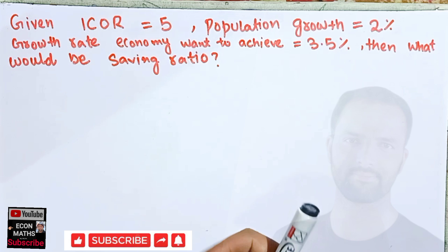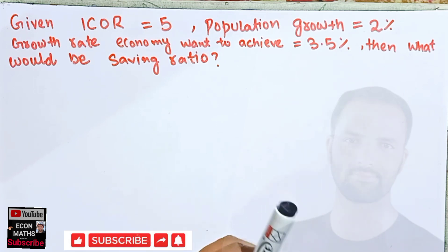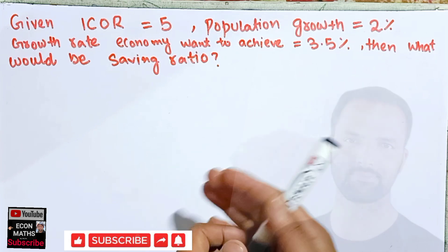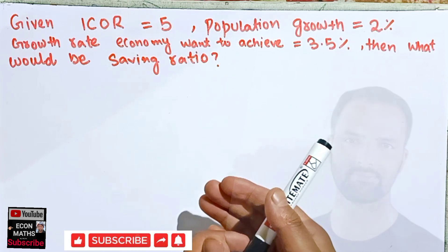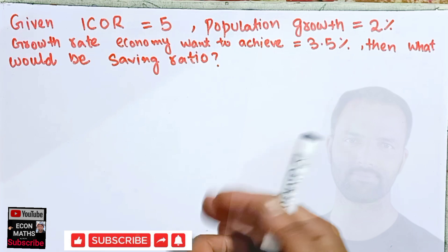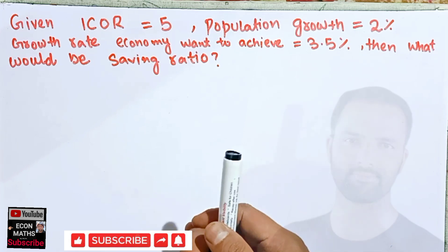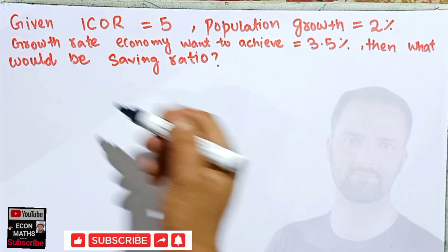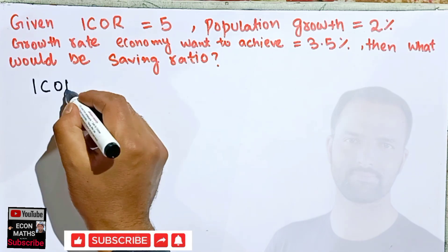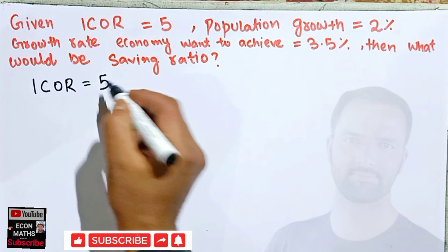This is actually a Harrod-Domar question. I got it from a friend and he has not mentioned the context, but I believe it is about the Harrod-Domar economy. So what we are being given: ICOR, that is incremental capital output ratio, is 5.